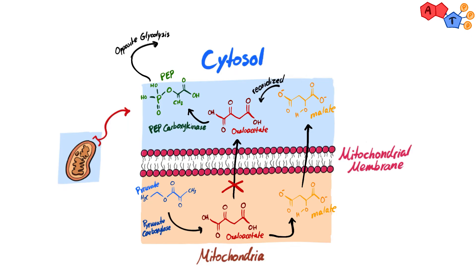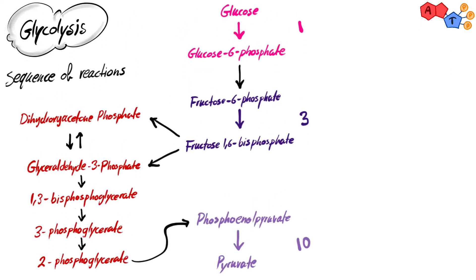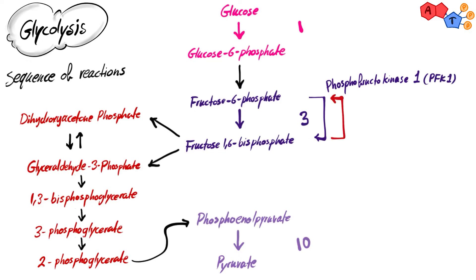PEP is then acted on by the reactions of glycolysis going in the opposite direction until it becomes fructose-1,6-bisphosphate. We've now reached the second roadblock: step 3 of glycolysis, the phosphorylation of fructose-6-phosphate into fructose-1,6-bisphosphate. In glycolysis, this irreversible step is catalyzed by phosphofructokinase-1. In gluconeogenesis, phosphofructokinase-1 is replaced by fructose-1,6-bisphosphatase, which hydrolyzes fructose-1,6-bisphosphate to form fructose-6-phosphate.